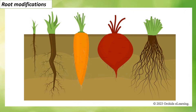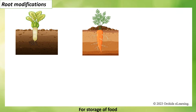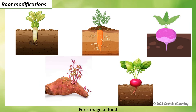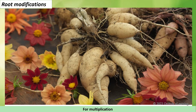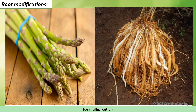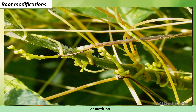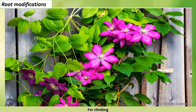Roots of some plants are modified to perform additional functions. For storage of food: the roots of some plants such as radish, carrot, turnip, sweet potato, and beetroot become fleshy. For multiplication: roots of plants such as dahlia and asparagus can develop into new plants. For nutrition: plants such as dodder have specialized roots called parasitic roots arising from their stem, which help them to absorb water and nutrients from the host.